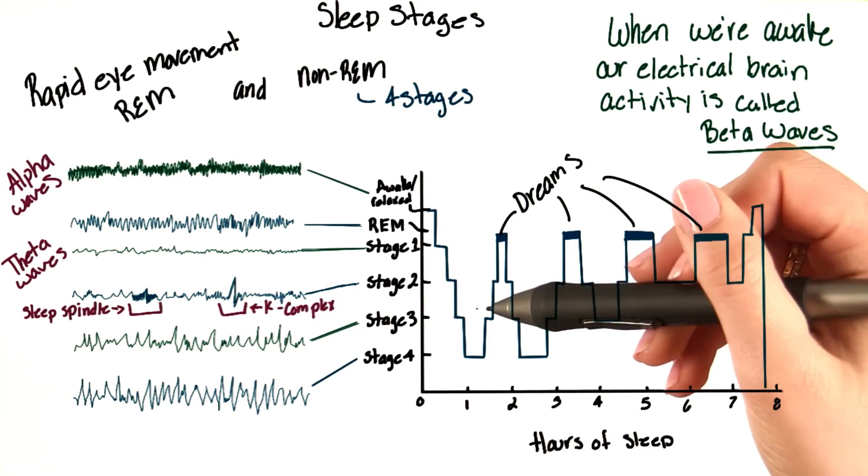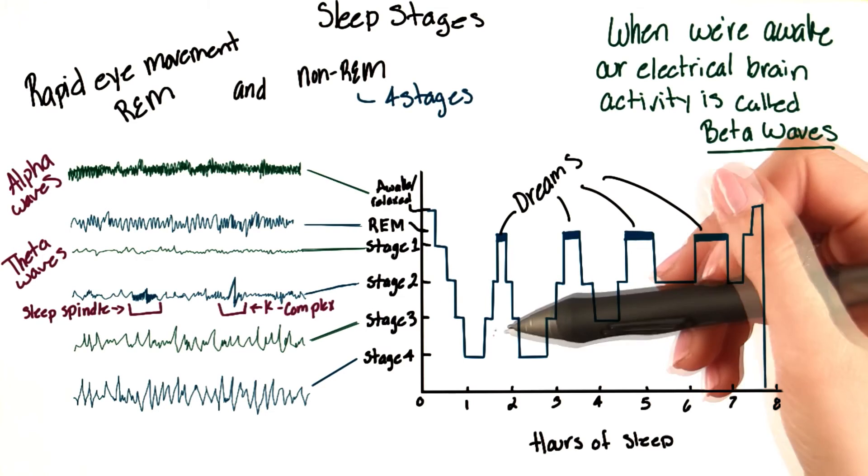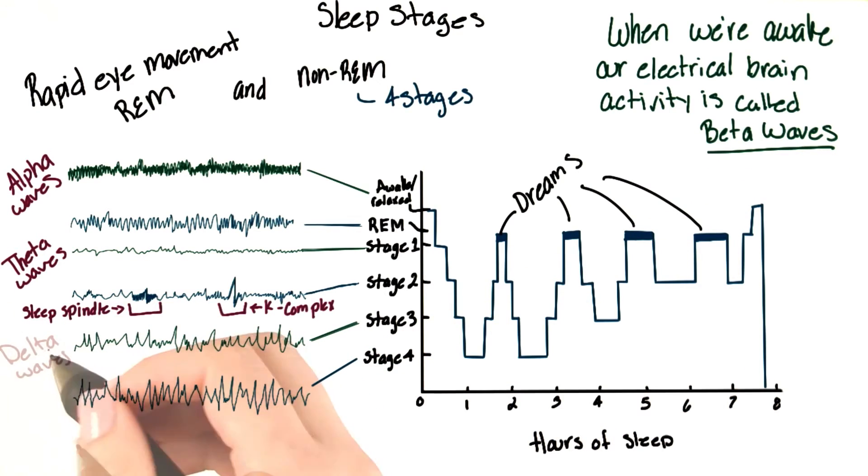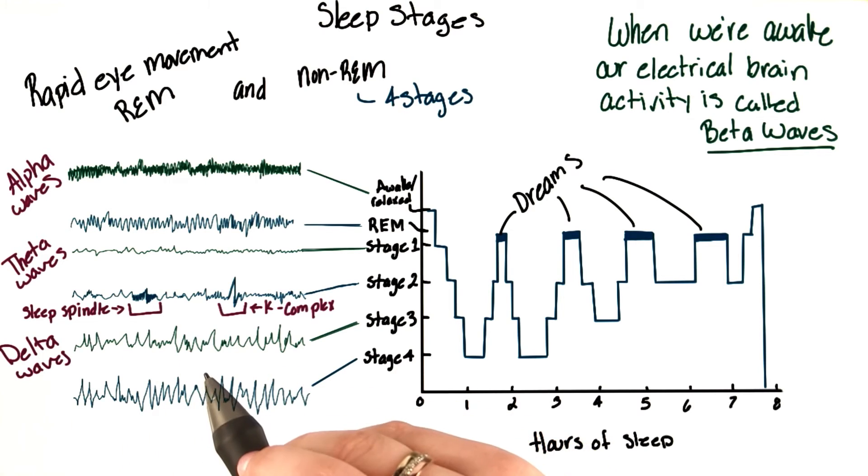After about 15 minutes in stage two, we move on to stage three sleep, which consists of theta waves again, but also delta waves, which are the slowest and strongest waves in our sleep cycle. So, stage three consists of some theta waves and some delta waves. And in stage four, we experience all delta waves. And this, again, is our deepest stage of sleep.